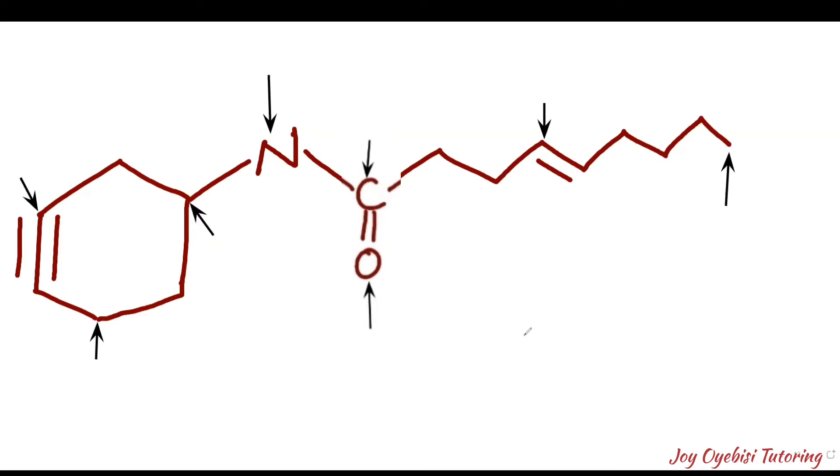The easiest way to identify hybridization is from their bonds. So if you have a single bond, it's going to be sp3. If you have a double bond, it's going to be sp2. And if you have a triple bond, it's going to be sp.